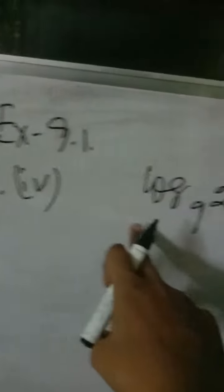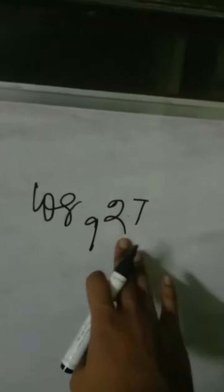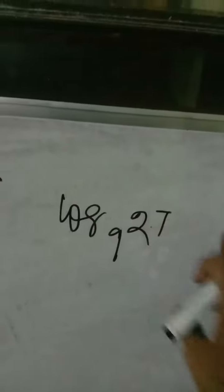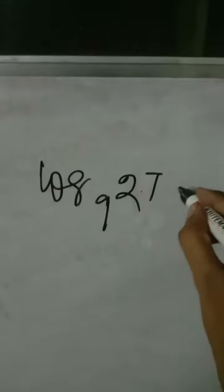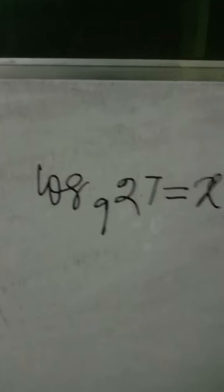Exercise 9.1.3 part 4: log base 9 of 27. We have to convert it to exponential form. We need to find the value of this. Let's assume that will be equal to x, so we know how we can convert it.